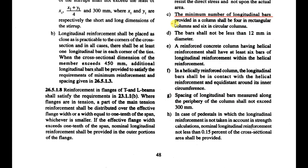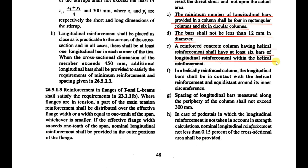The minimum number of longitudinal bars provided in a column shall be four in rectangular columns and six in circular columns. The bar diameter shall not be less than 12 mm. A reinforced concrete column with helical reinforcement shall have at least six bars of longitudinal reinforcement within the helical reinforcement. The spacing of longitudinal bars measured along the periphery of the column shall not exceed 300 mm.